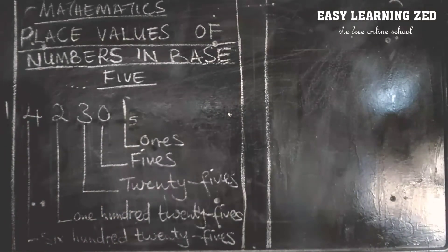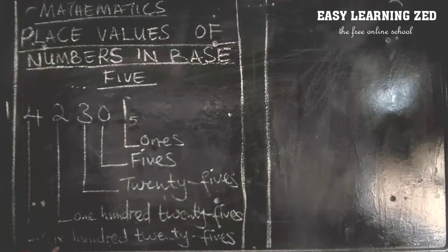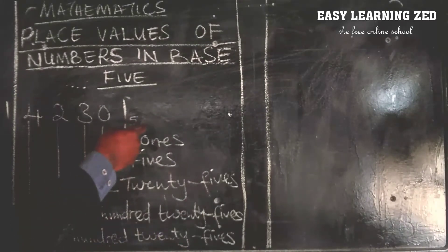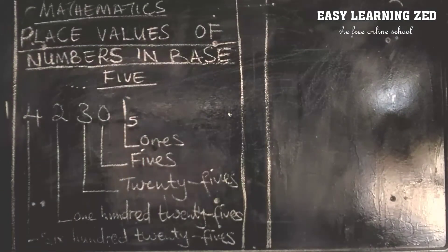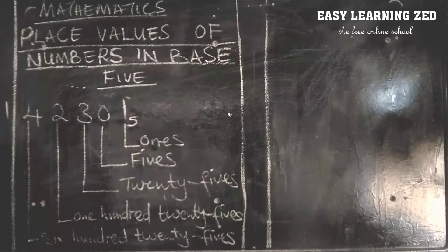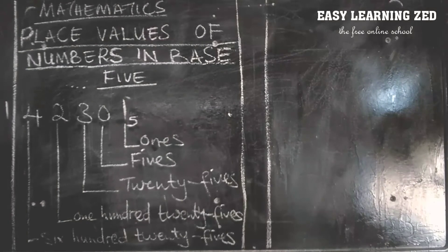To find the place value of four, we multiply one hundred twenty-five by five which gives us six hundred twenty-five. If there was another number, we could multiply six hundred twenty-five by five which would give us three thousand one hundred twenty-five. This is how you find the place value of numbers in base five.